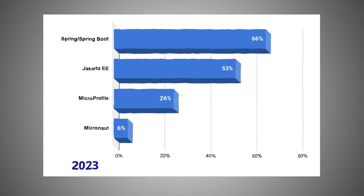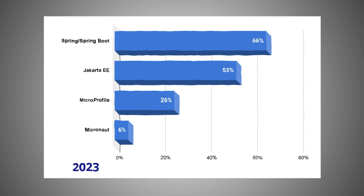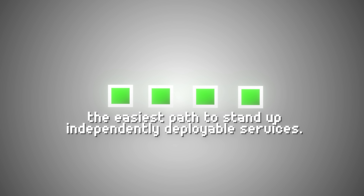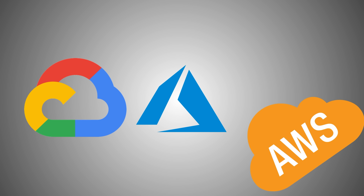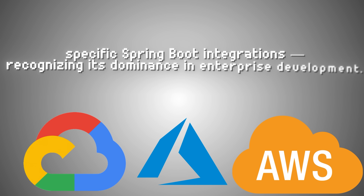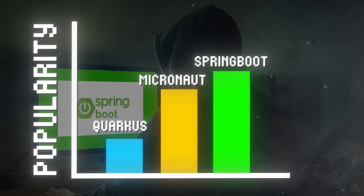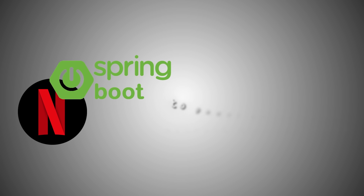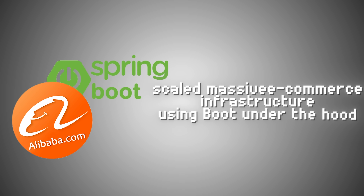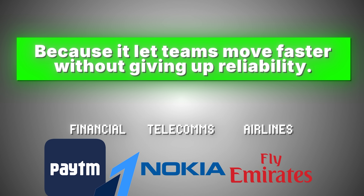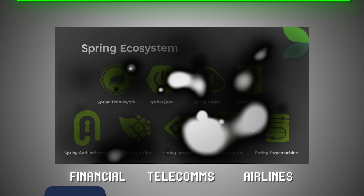By 2023, surveys showed Spring Boot was the default for most new Java projects, with some estimates placing usage above 70%. Boot starter modules, auto-config, health endpoints, and the embedded server model made it the easiest path to stand up independently deployable services. Even Google Cloud, Azure, and AWS all created specific Spring Boot integrations, recognizing its dominance in enterprise development. Spring Boot wasn't just a developer's favorite — it became a cornerstone for the world's most demanding companies. Netflix used Spring Boot to power parts of its back-end microservices. Alibaba scaled massive e-commerce infrastructure using Boot. Financial institutions, telecoms, and airlines all embraced it — because it worked, letting teams move faster without giving up reliability.